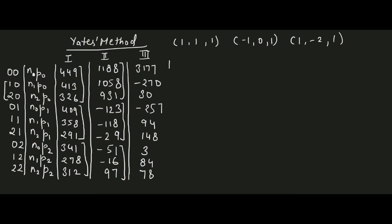So this way we have computed these two columns from the original yields. One has to compute as many such columns as the number of factors in the experiment — that is, in general, if there are K factors, then K columns must be computed. Since this is a 3 raised to 2 factorial design with only two factors, we have computed only two columns. Had this been a 3 raised to 3 factorial design, we would be computing one more column.